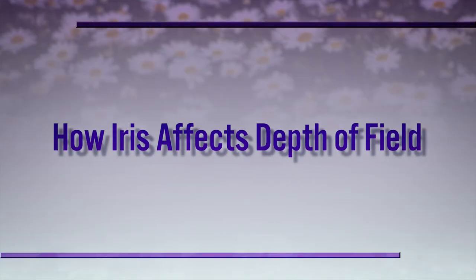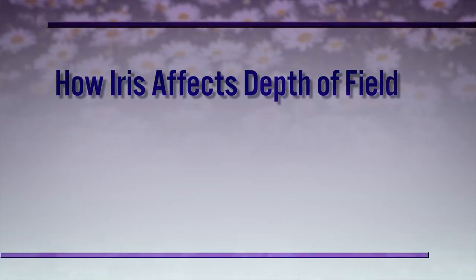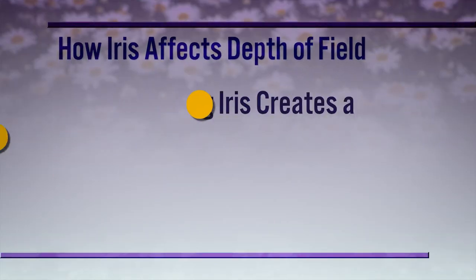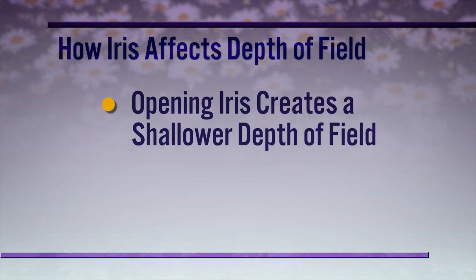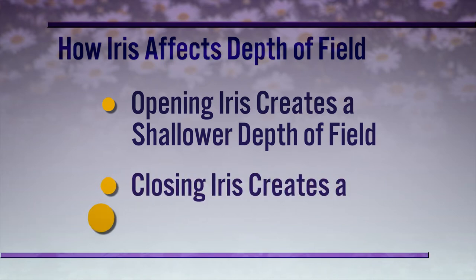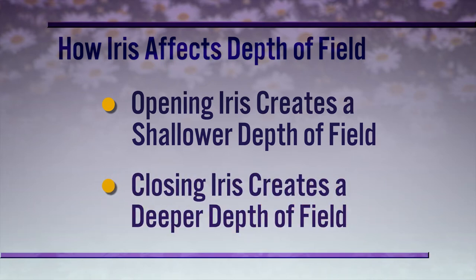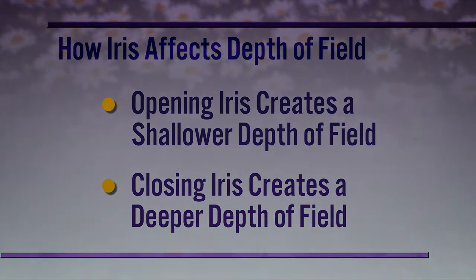So what does this have to do with depth of field? Opening up the iris — that is, making the hole bigger — will have the effect of making your depth of field shallower. Conversely, closing down the iris, making the hole smaller, will have the opposite effect and make your depth of field deeper. Let's look at some practical examples.